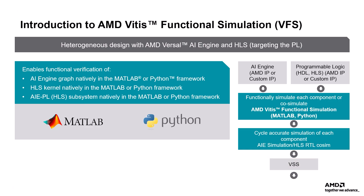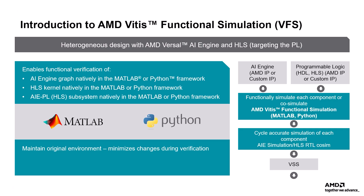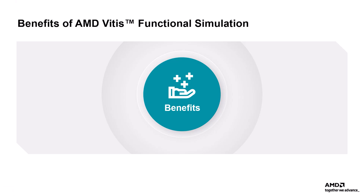Design goals for functional simulation: Maintaining the original environment minimizes changes during verification by using the original design tools such as MATLAB or Python scripting. Support for heterogeneous systems enables functional verification by integrating AIE-SIM, X86-SIM, and PL HLS co-simulation within an existing environment. Bit accuracy validates the bit-level functional accuracy of the design. The goal is to allow a heterogeneous design to be imported into a customer's environment of choice and allow the ability to use existing frameworks.